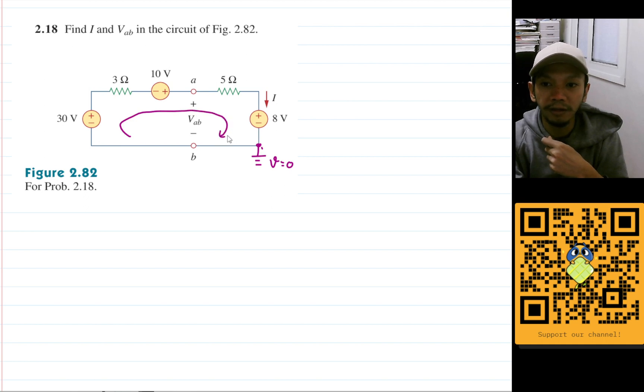We can just use KVL at loop I. Let's start from this 30V voltage source. The current is flowing from negative to positive, so I will have minus 30, and then plus 3 multiplied by I.